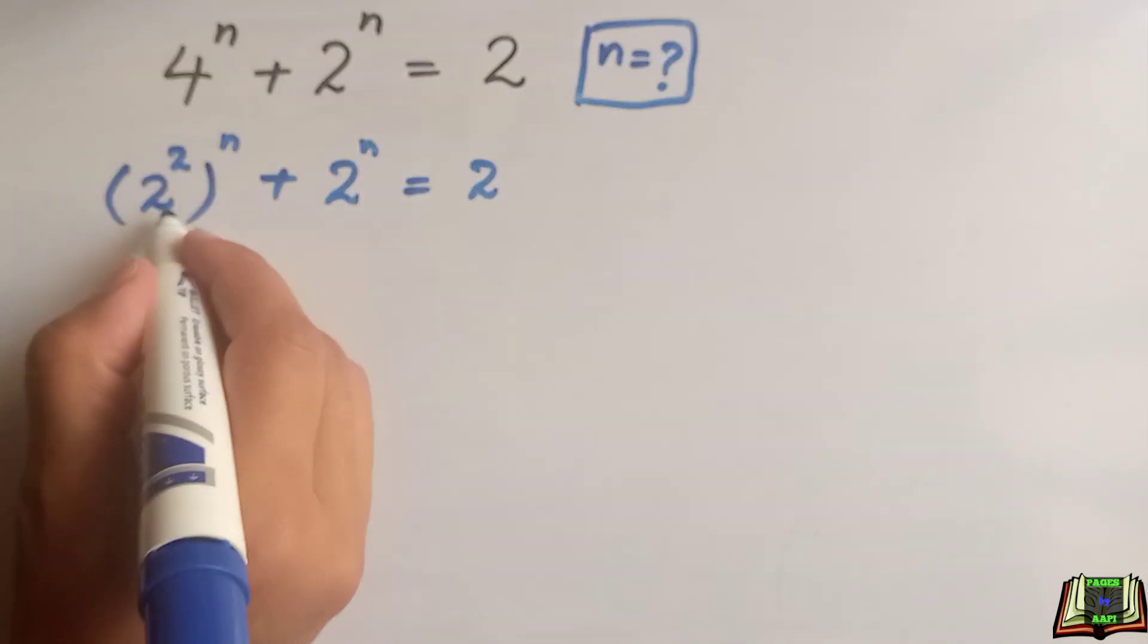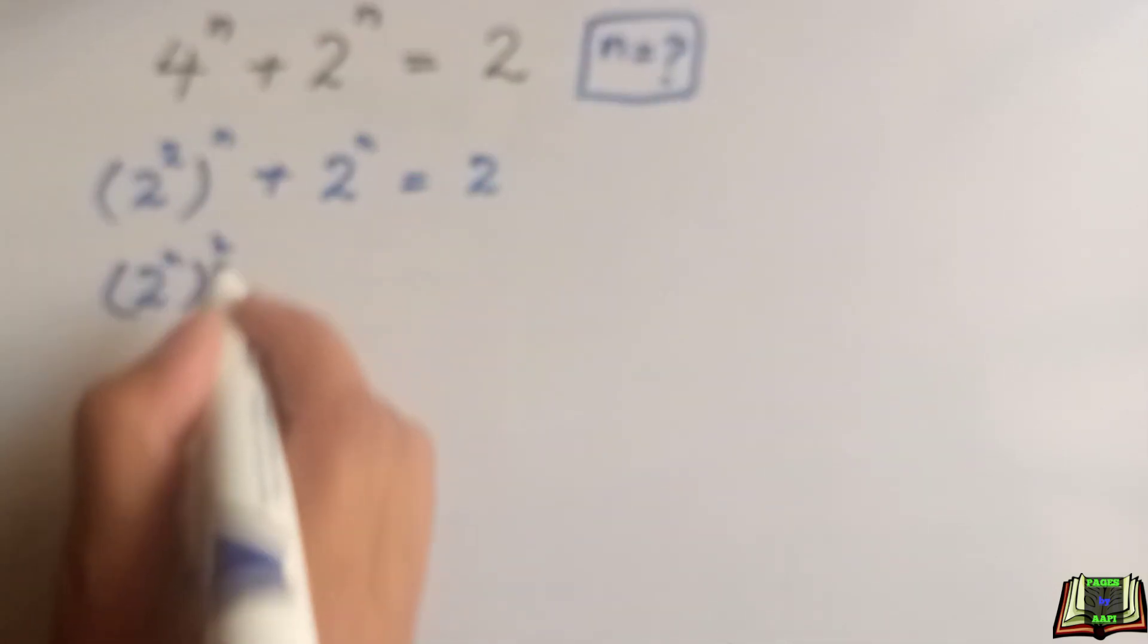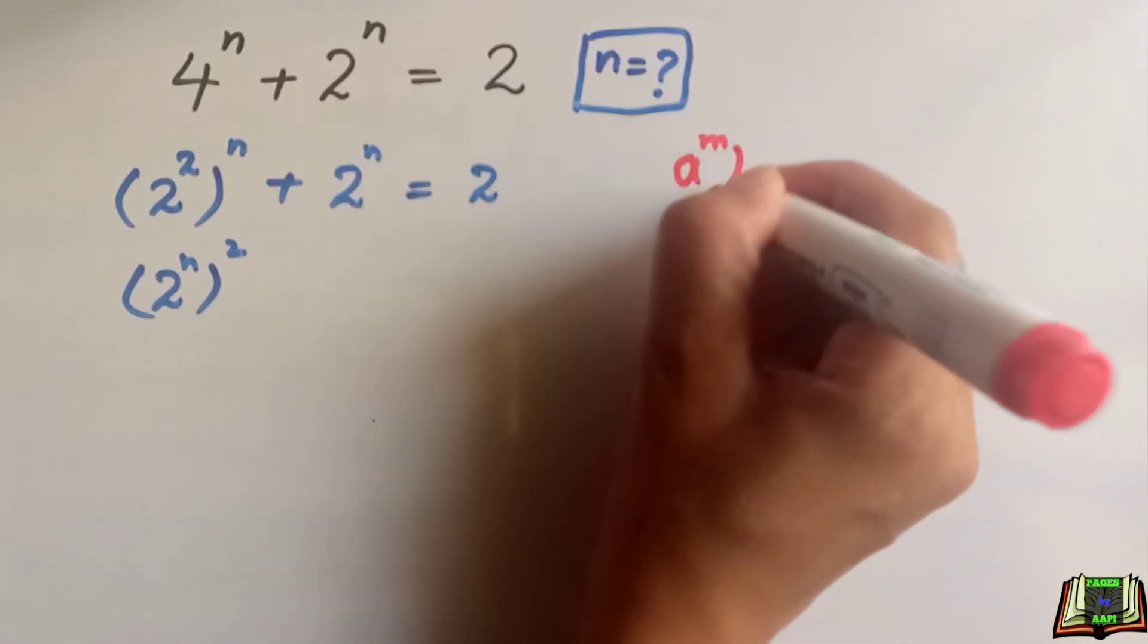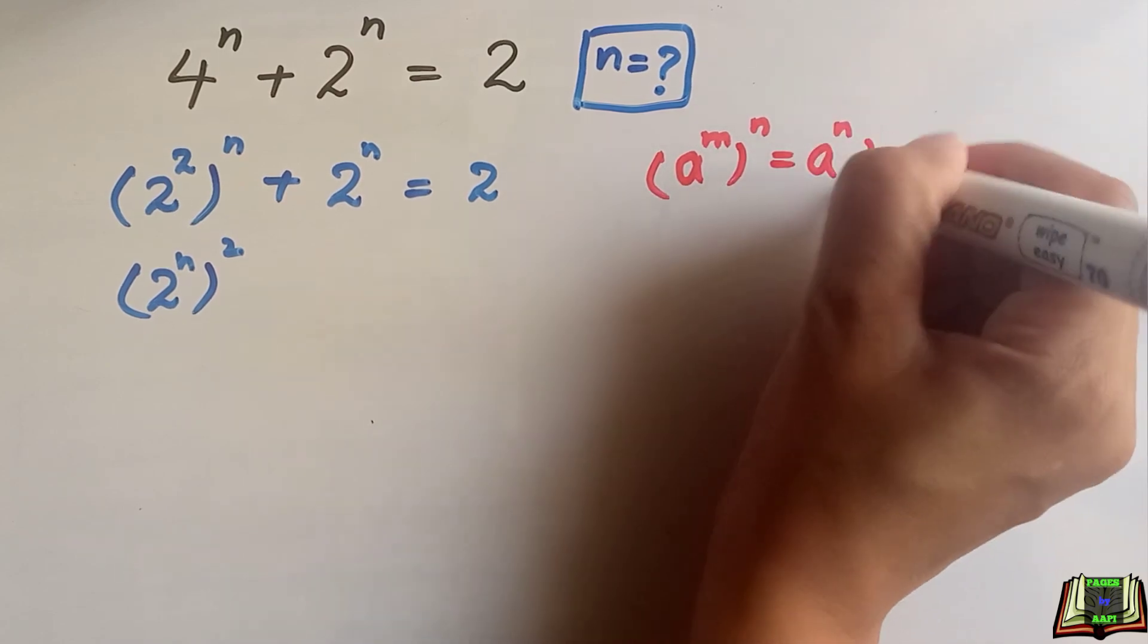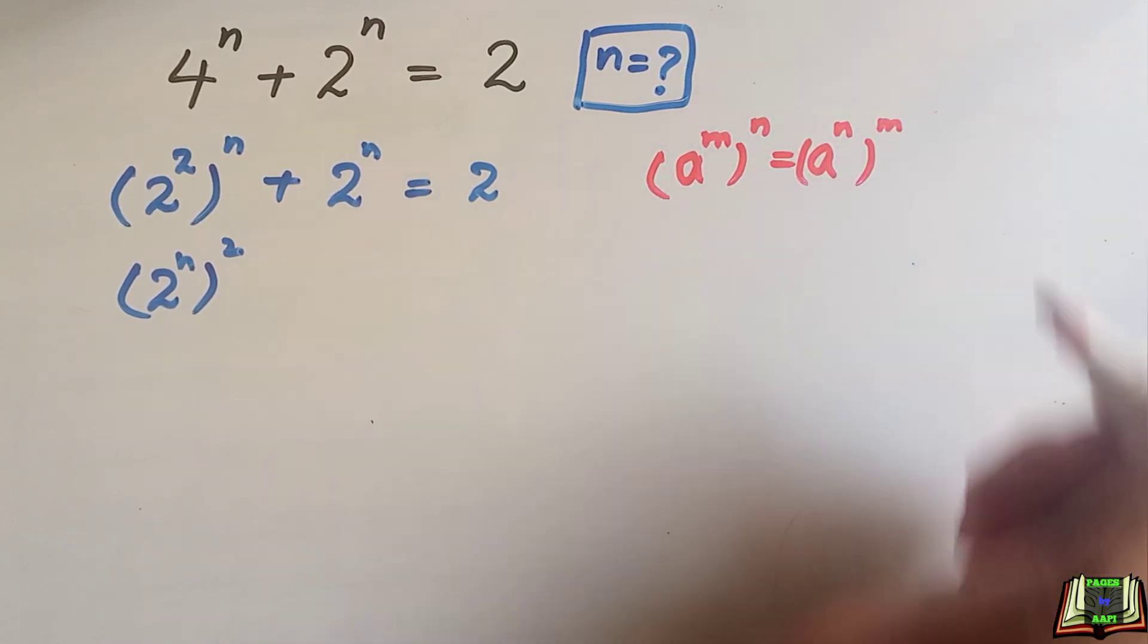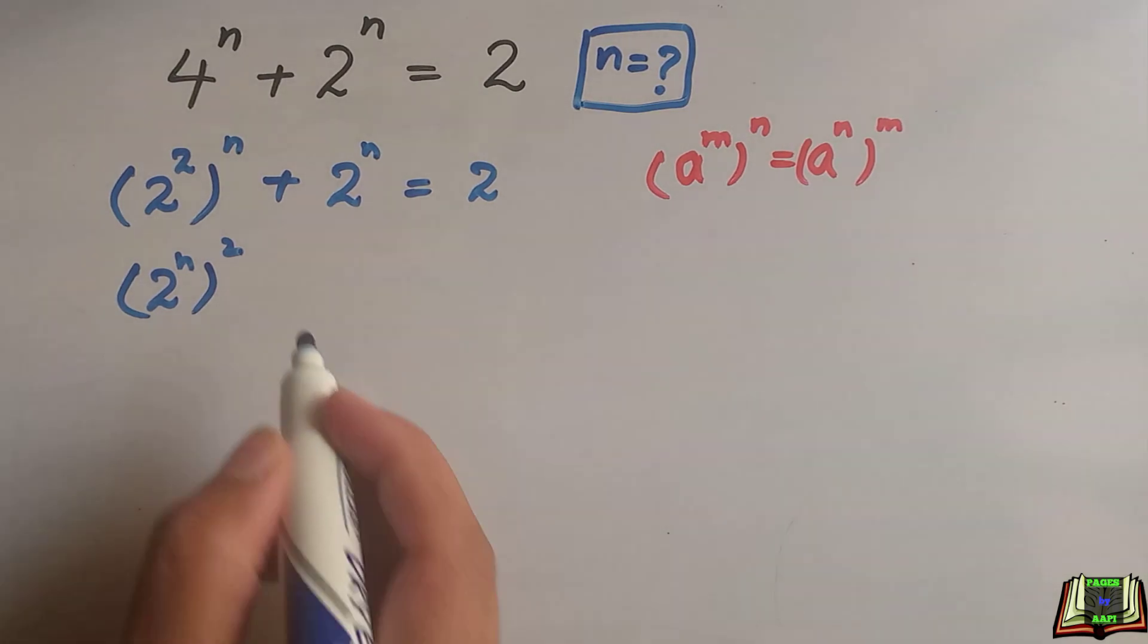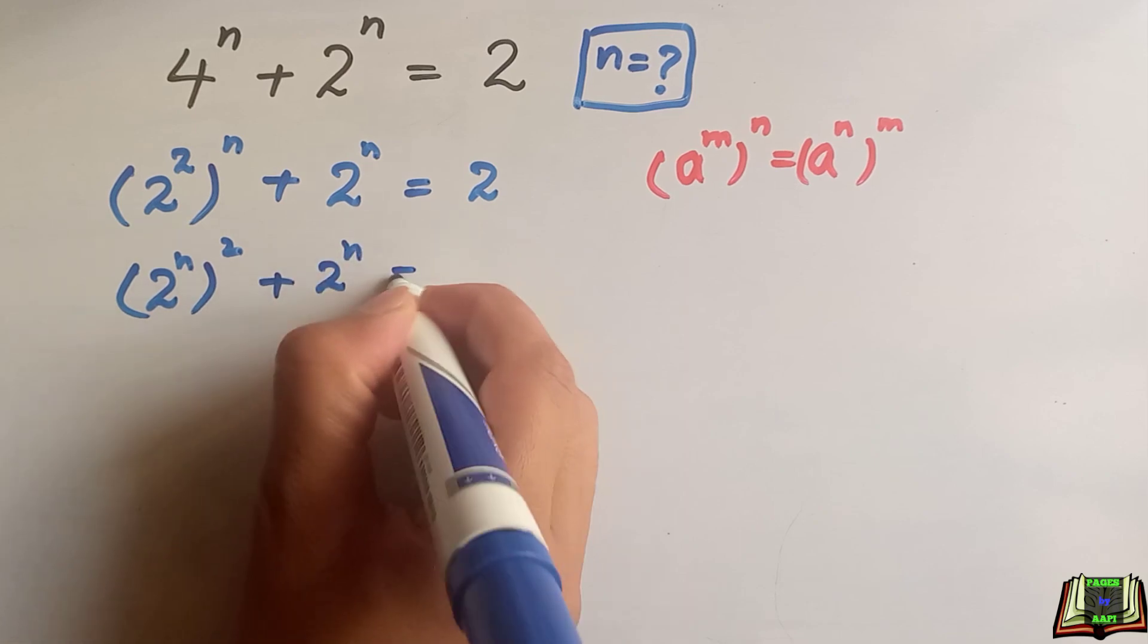We can rewrite this as 2 to the power n whole power 2. Here we use an exponent law that says a to the power m to the power n is the same as a to the power n to the power m. So simply we use that rule here, plus 2 to the power n is equal to 2.